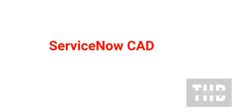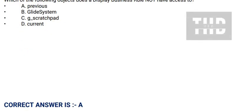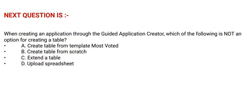Question: Which of the following objects does a display business rule not have access to? Option A: previous. Option B: GlideSystem. Option C: g_scratchpad. Option D: current. The correct answer is Option A.